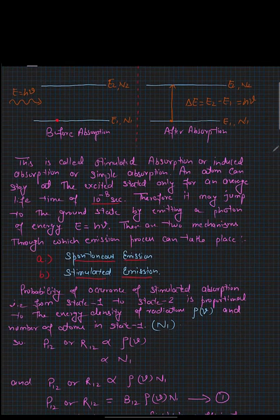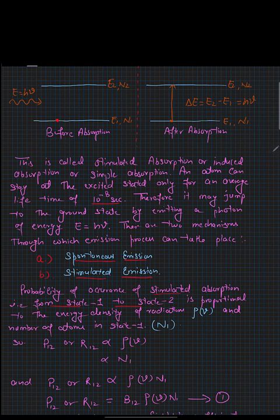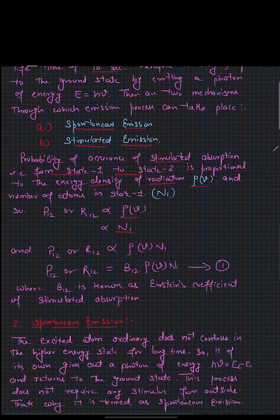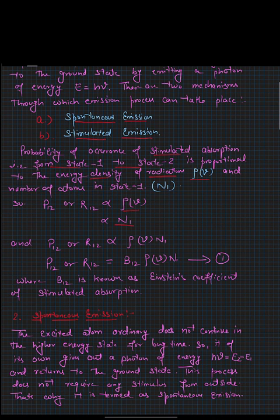Before discussing emission, let's find the probability of stimulated absorption, which is the transition from state 1 to state 2. This probability is proportional to the energy density of incident radiation, represented as rho-nu, and the number of atoms present in state 1 — the ground state. The rate of occurrence of this absorption is proportional to rho-nu times N1, with proportionality constant B12. This B12 is known as the Einstein coefficient for stimulated absorption.